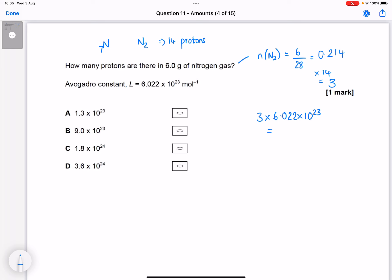On our calculator, we get 1.8066 times 10 to the 24. So we would select answer C.